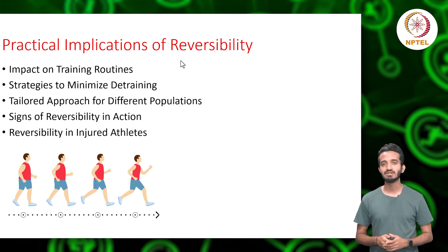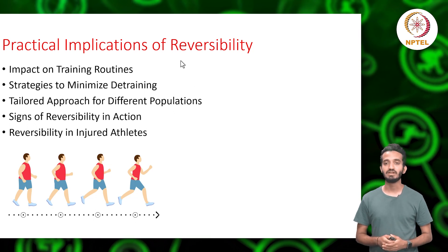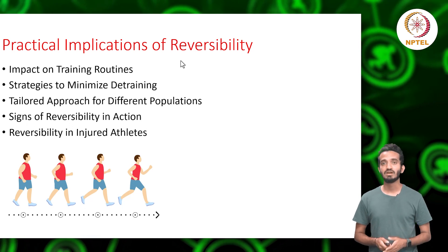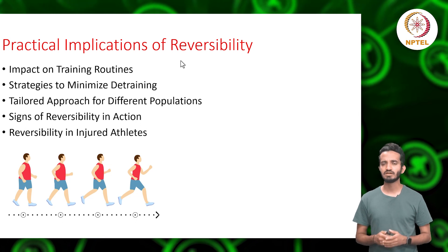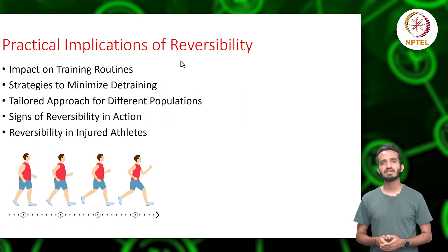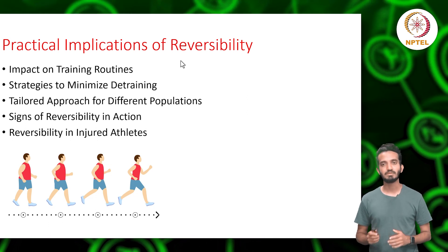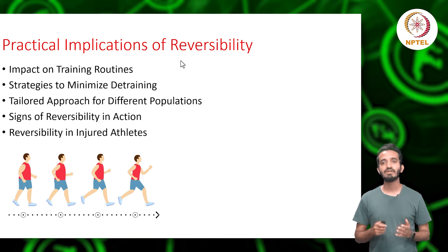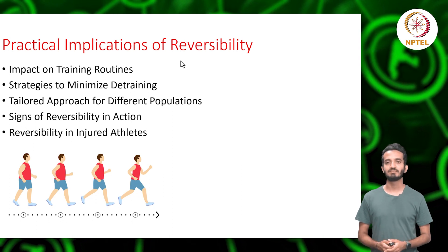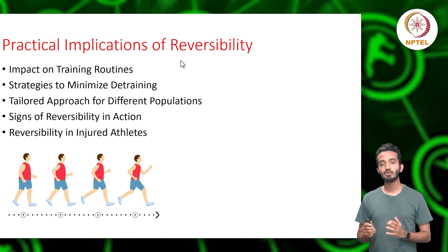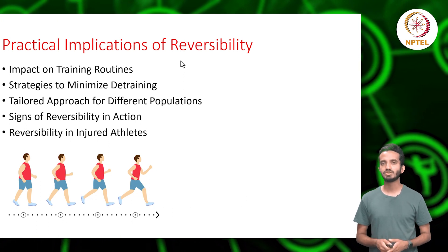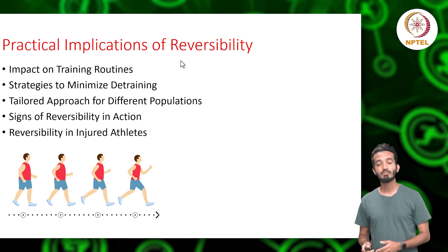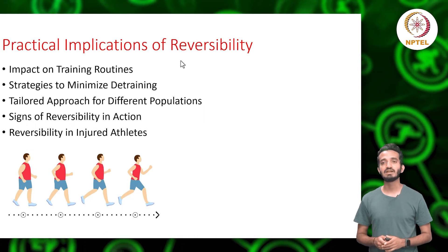One cannot stress enough the importance of planning and foresight in strength and conditioning, especially given the principle of reversibility. When mapping out training routines, it's imperative to consider the potential breaks one might need — for vacations, rest, or unforeseen circumstances. During these breaks, even if intense training isn't feasible, integrating lighter workouts can be beneficial. For instance, athletes accustomed to heavy weight training can incorporate bodyweight exercises, while those focused on cardiovascular conditioning can swap long runs for brisk walks or light jogs. Such strategies ensure the gap between stopping and restarting training doesn't create a significant decline in fitness levels.